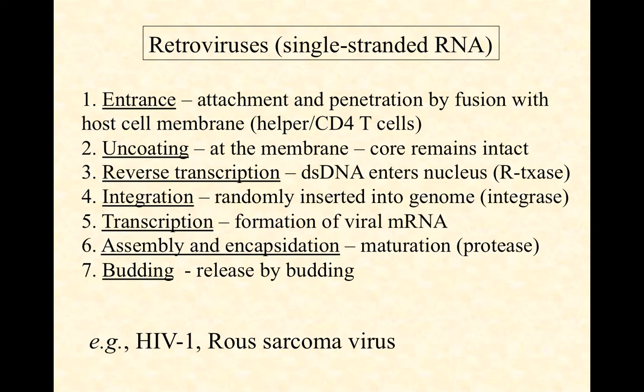Reverse transcription is the next step. Retroviruses package and encode reverse transcriptase, which reads a single-stranded RNA molecule and synthesizes a double-stranded DNA from it. This is the reverse of normal transcription — transcription reads double-stranded DNA to make single-stranded RNA, while reverse transcriptase does the opposite. The result is a double-stranded DNA copy of the original single-stranded RNA.